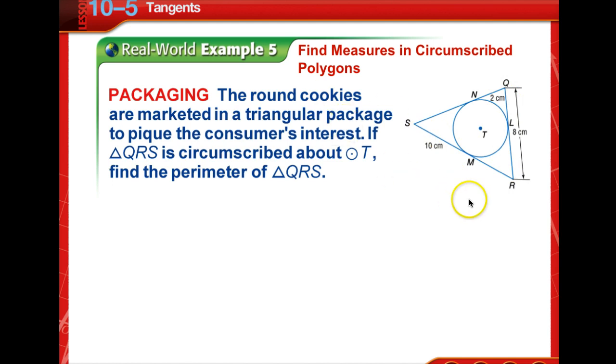This sounds very difficult, but actually it's pretty simple. If we stop and look at this, we see that QR is 8 and QN is 2, so we know that QL must be 2, and if QL is 2 of the 8, then we know that LR must be 6. If LR is 6, then we know that MR is 6, and we also know that if SM is 10, SN is 10.